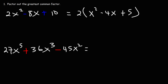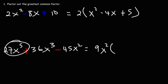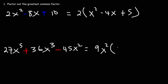For the next one, what is the GCF? Notice that 27, 36, and 45 are all divisible by 9. Looking at the variables, the smallest power is x squared, so we can factor out 9x squared. 27x to the fifth divided by 9x squared: 27 divided by 9 is 3, and 5 minus 2 is 3, so we get 3x cubed.